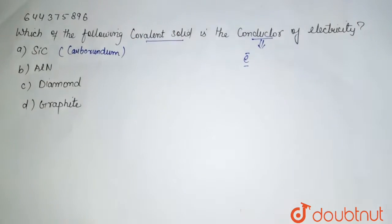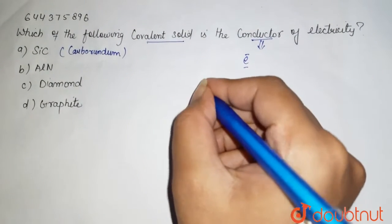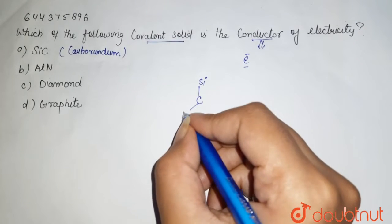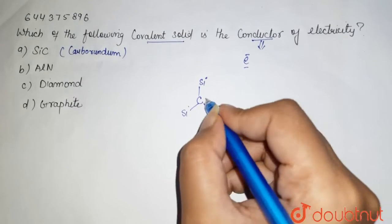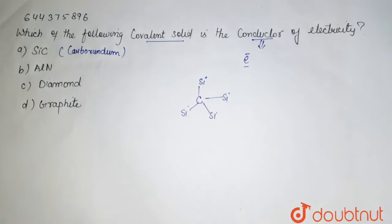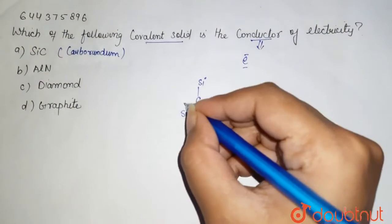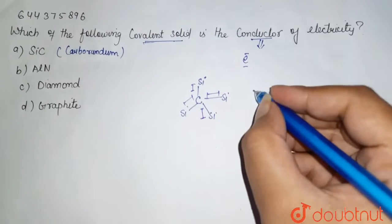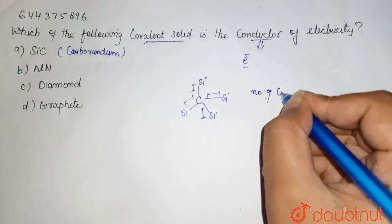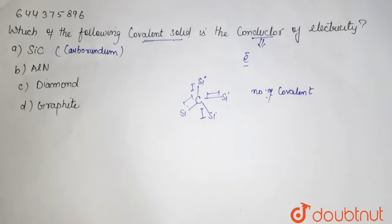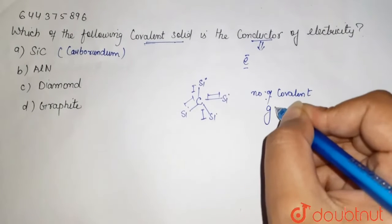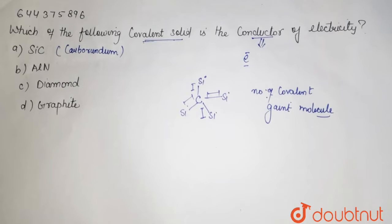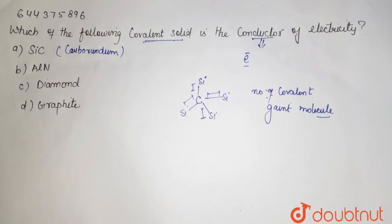Its structure looks like this. Here it is carbon and first we are having silicon, again silicon. This is the structure of SiC. Covalent solid means there are a number of covalent bonds endlessly attached with the atoms and form the giant molecule. That is your covalent solid.